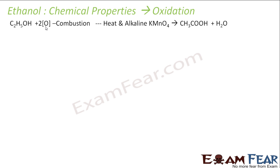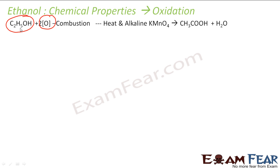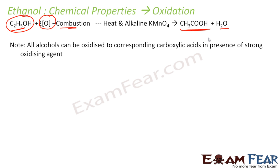Oxidation is a controlled combustion. When you have this alcohol and use nascent oxygen — a very strong oxidizing agent — you get it from either alkaline KMnO4 (potassium permanganate) or acidified potassium dichromate. Anything with a very strong oxidizing agent converts ethanol to ethanoic acid, and water is produced. Please note: all alcohols can be oxidized to corresponding carboxylic acids in the presence of strong oxidizing agents such as alkaline KMnO4 or acidified potassium dichromate.